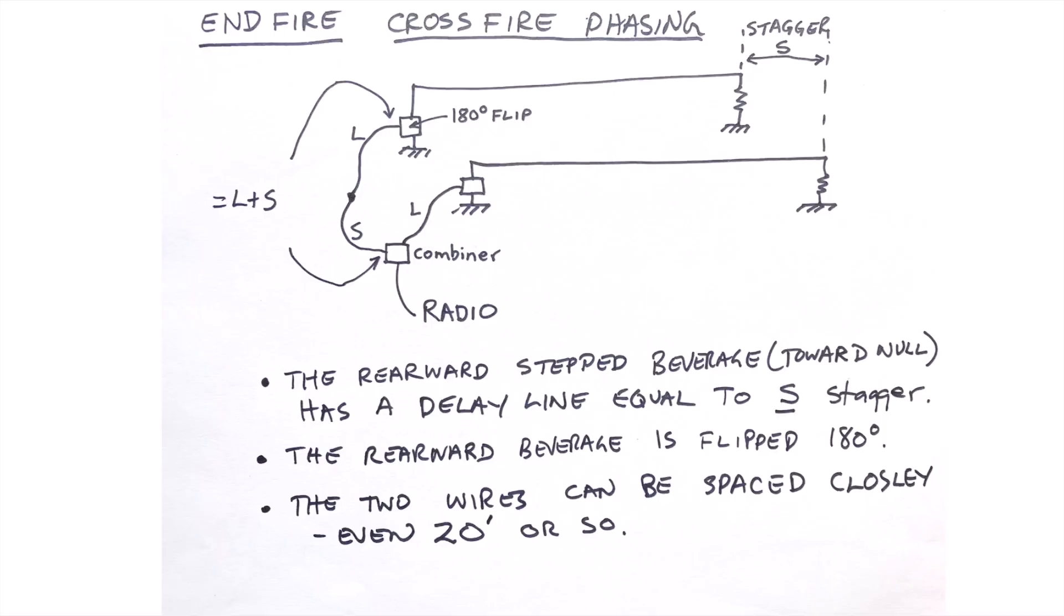If instead of a broadside phased pair you're building an end echelon staggered end-fire beverage array, rather than equal length feed lines to each beverage, the rearward staggered beverage has a delay line. This delay line, this extra length of coax, is exactly equal to the staggered distance - the offset distance in electrical degrees, in electrical length. Now, this is vital: in the case of the crossfire feed system, which this is, it requires that one of the beverages be flipped 180 degrees. That's easy - it's just like we talked about earlier. We can reverse the beverage wire and the ground wire, or we could flip the coax connection anywhere, either at the antenna or in the combiner. This 180 degree phase flip is essential to get the correct phase using the crossfire feed method.